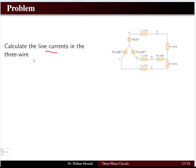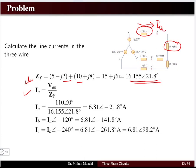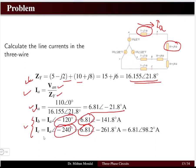Let us solve one problem: calculate the line current in a three-wire system where the source is balanced star-connected and the load is also balanced star-connected. The impedance Z_Y is obtained as the sum of the line impedance and the load impedance (source impedance is not given). The current I_A is the phase voltage divided by the total impedance, giving 6.81 at minus 21.8 degrees amperes. Currents I_B and I_C have the same magnitude with 120-degree phase differences.